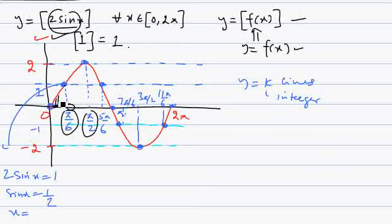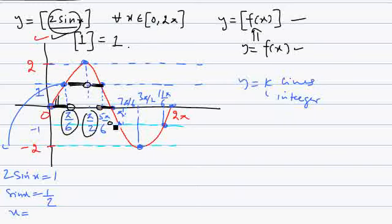So the rule is: map the graph between two horizontal lines onto the y = k line below the graph — push the graph down to the horizontal line below it. All values between integers collapse to the lower integer. The curved portions go away, and only horizontal steps remain.